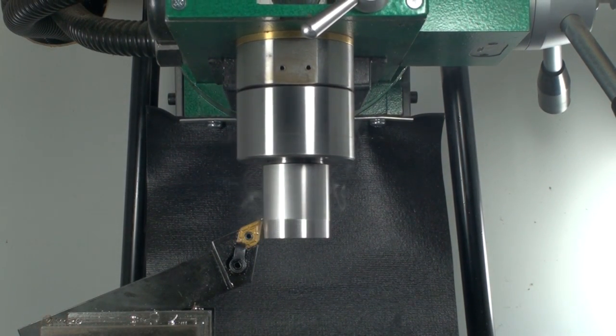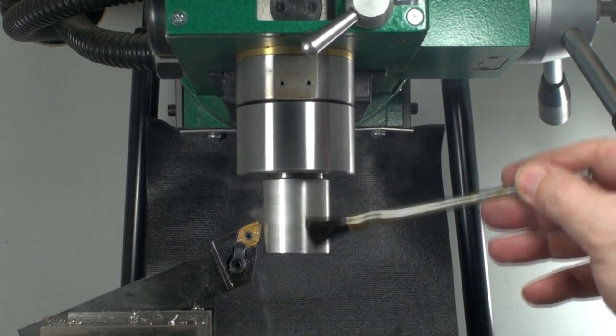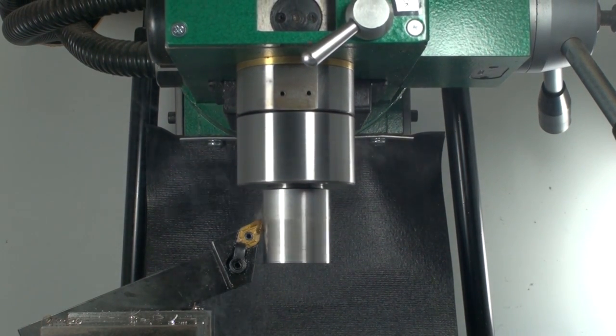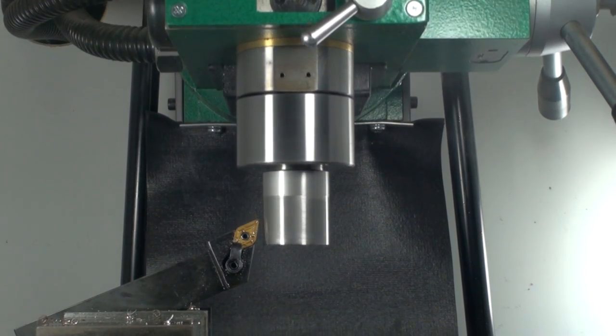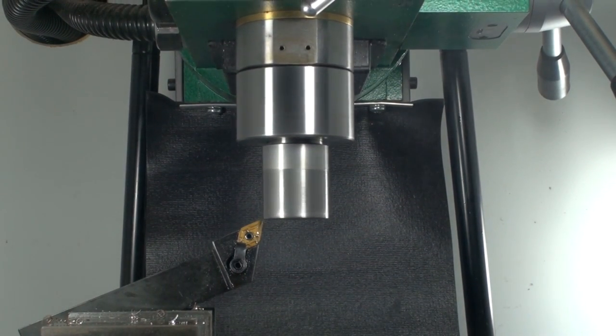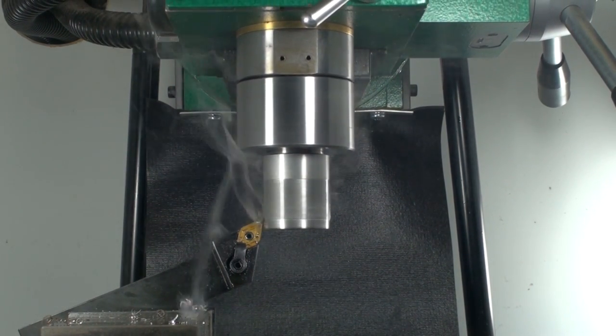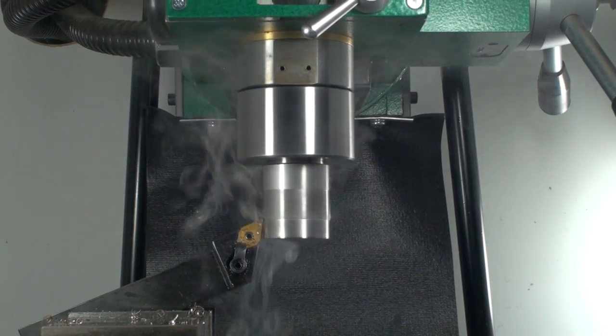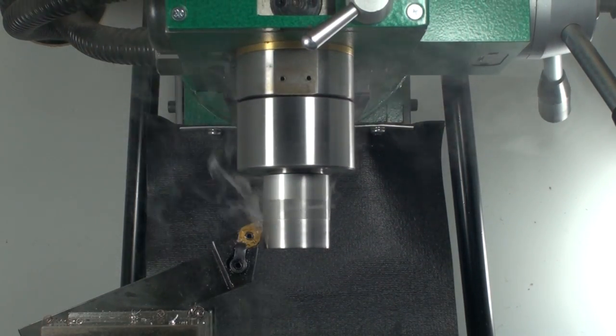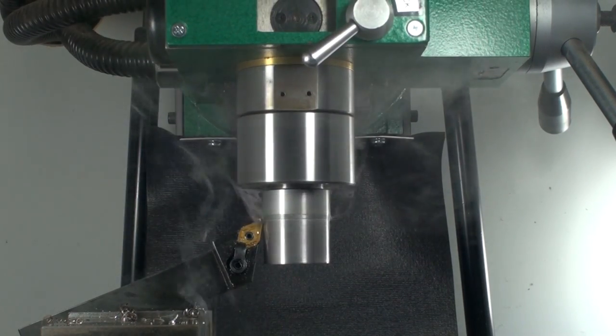This is where, as I mentioned before, if we had any runout introduced in the lathe chuck, it'll be corrected now as the stock rotates in the mill spindle. Any eccentricity will be cut away in these second set of operations and it will result in a tool holder that is exactly aligned with the center line of the mill.